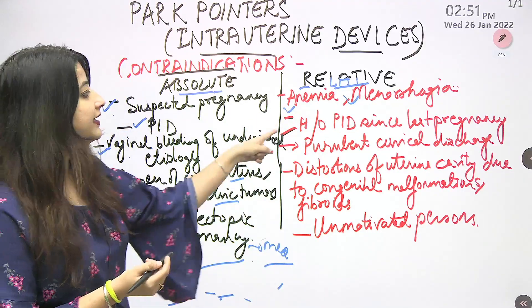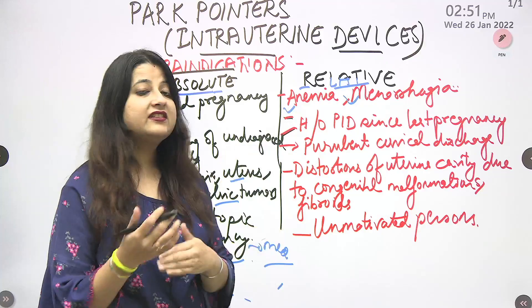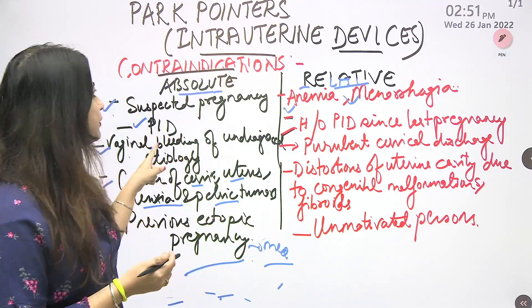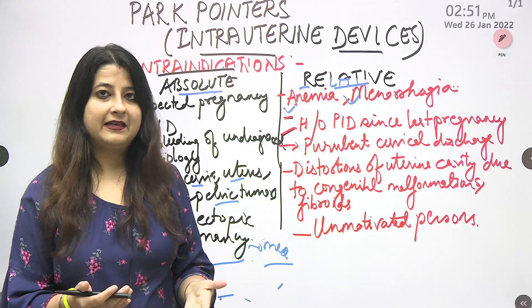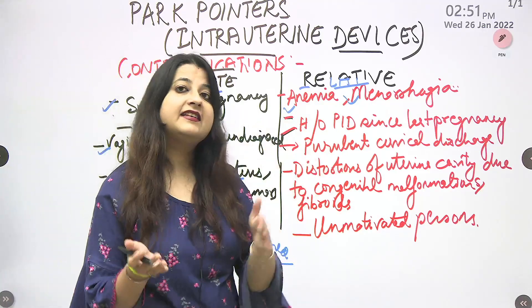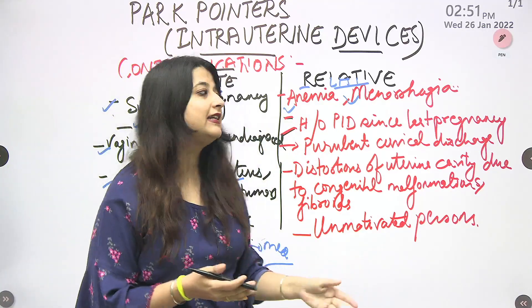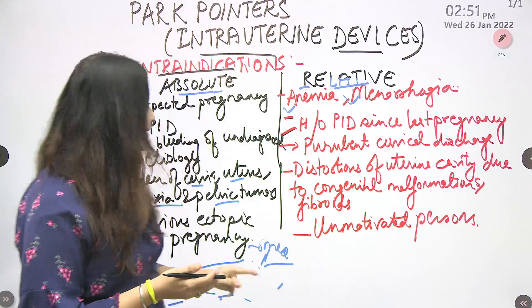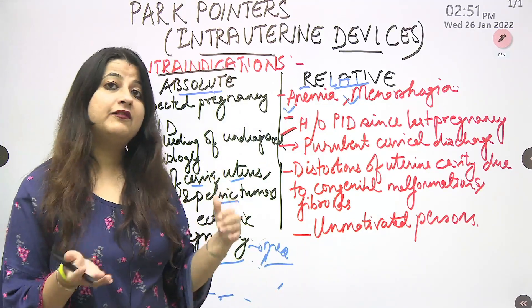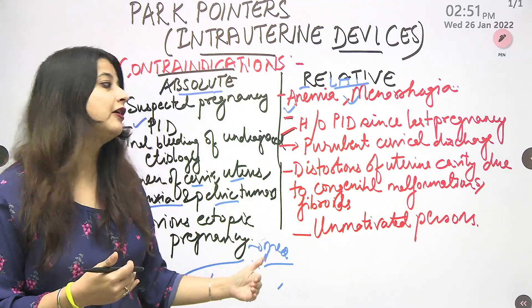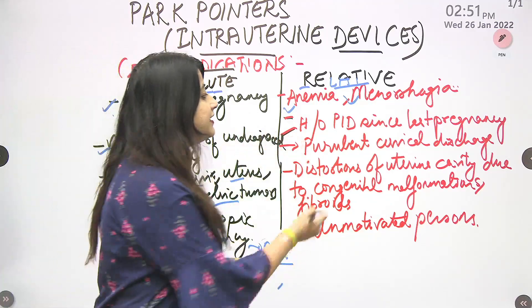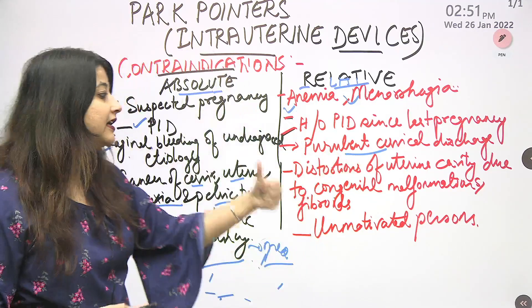Coming to the relative contraindications: anemia and menorrhagia as already discussed. Next, history of PID since last pregnancy — note that active PID is absolute, but a history of PID in the last pregnancy is relative. Similarly, on the absolute side we had vaginal bleeding of unknown etiology, while on the relative side it is purulent cervical discharge.